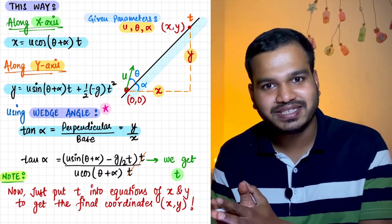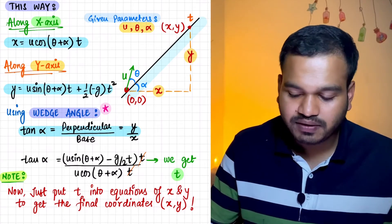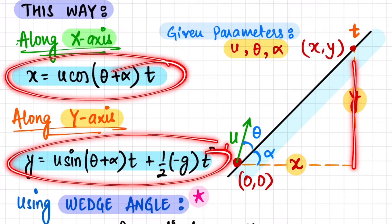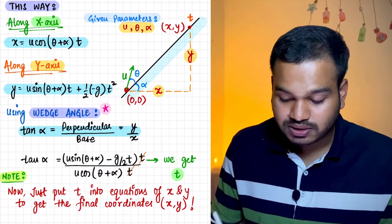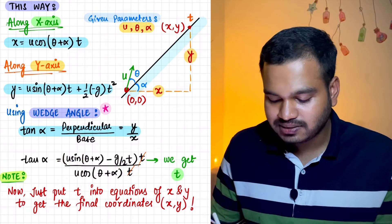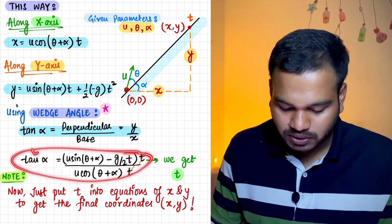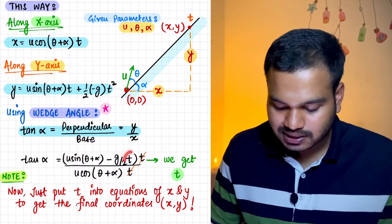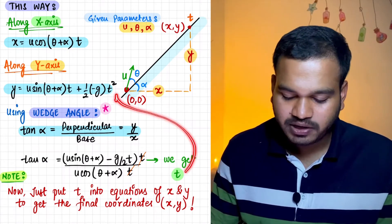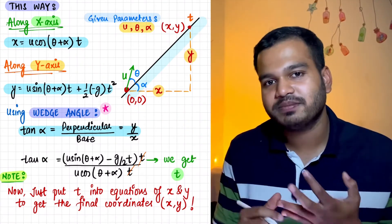Now the most interesting twist: the wedge angle alpha is fixed and won't change. So if we write tan(alpha) = y/x in this right-angle triangle, and divide the y-equation by the x-equation, we get tan(alpha) = y/x. One factor of t cancels, leaving one t, so from this we can solve for t (time of flight). Once t is known, substitute back to get y, then x. So we have x, y coordinates and time of flight.